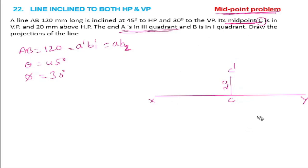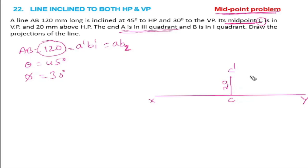We will solve this midpoint problem. End A uses only half of the distance — total length is 120mm, so half the length is 60mm. Almost 60-70% of the problem is complete using these two small steps. The midpoint is at 60mm.